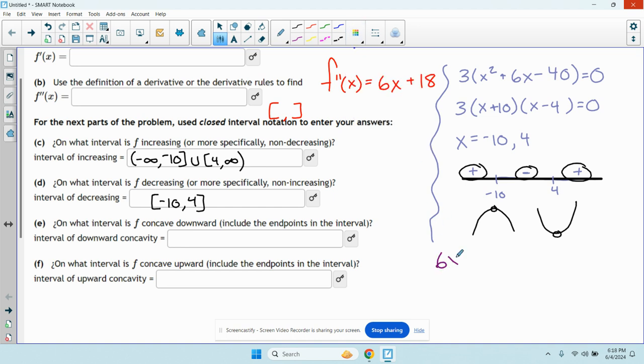Let's pick another color here. We'll do purple. I have 6x plus 18 equals 0. I get 6x equals negative 18. x equals negative 3.